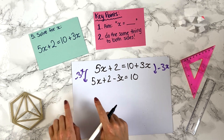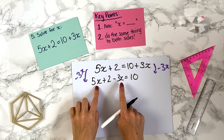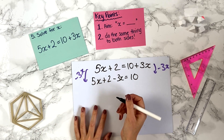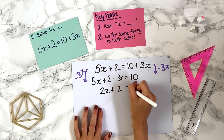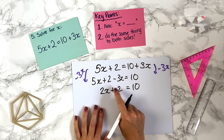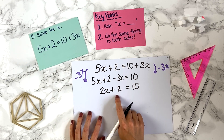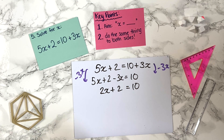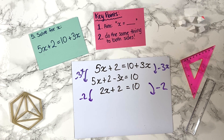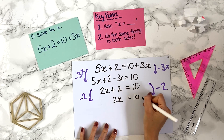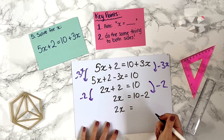We've brought the x's to the left side. We can combine those terms: 5x minus 3x is 2x. So we have 2x plus 2 equals 10. We still have a number term on the left, so to get rid of the plus 2 we minus 2 from both sides. That gives 2x equals 10 minus 2, which is 8.